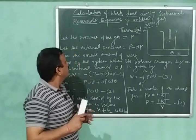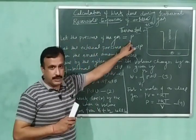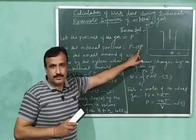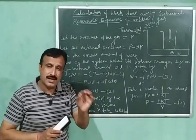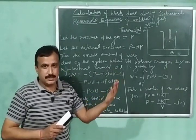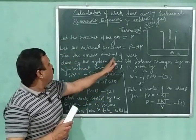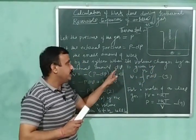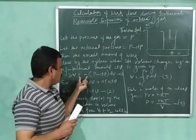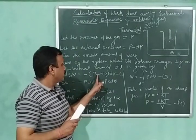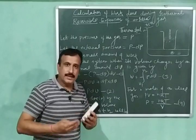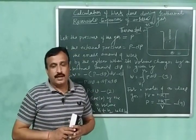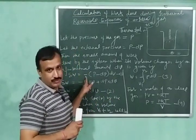Now let us derive the expression for work done. Let the internal pressure of the gas be equal to p, and let the external pressure be equal to p minus dp, since the external pressure should be slightly less than the internal pressure for expansion to take place very slowly. Then the small amount of work done by the system when its volume changes by an infinitesimal amount dv is given by: delta w = −(p − dp) · dv. Work of expansion equals external pressure multiplied by change in volume, and since work is done by the system, we have a negative sign.